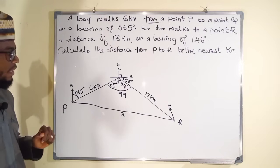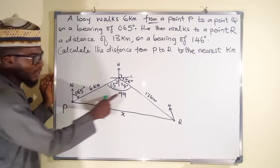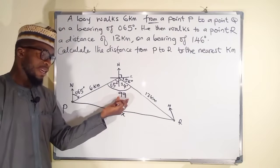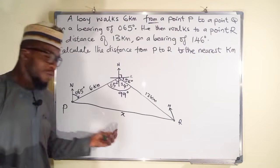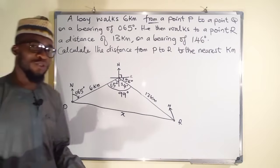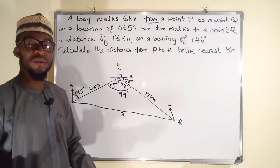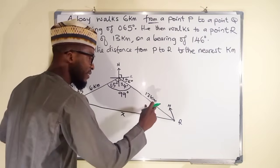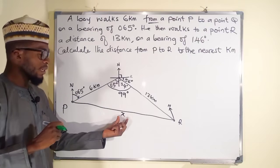Now we can use this information to find X. We are given one side as 6 kilometers, the other as 13 kilometers, and the angle in between them is 99 degrees. The knowledge of geometry and trigonometry is very important in solving bearing problems. Whenever you are given two sides and the included angle, you are free to use the cosine rule to find the missing side.